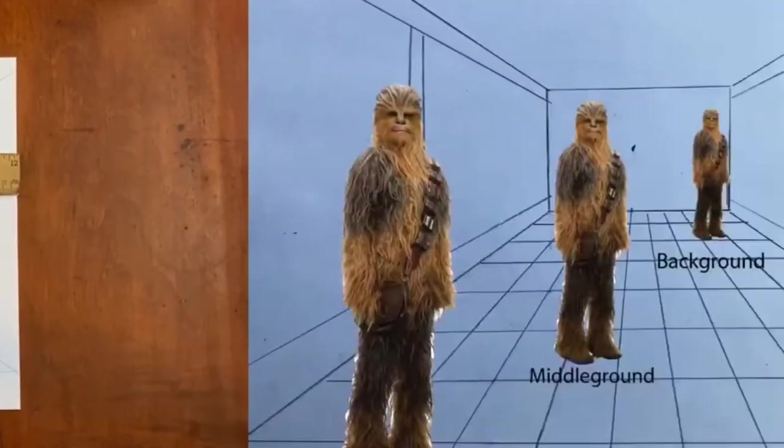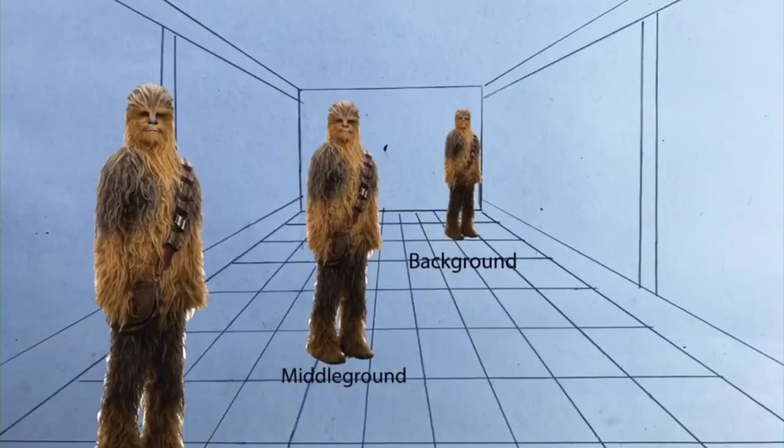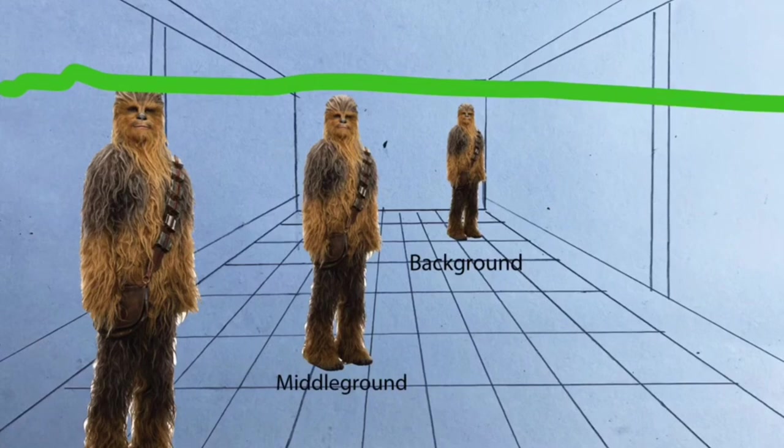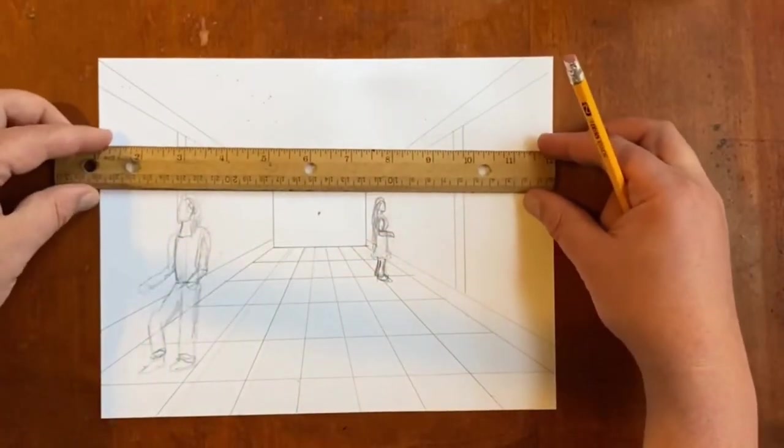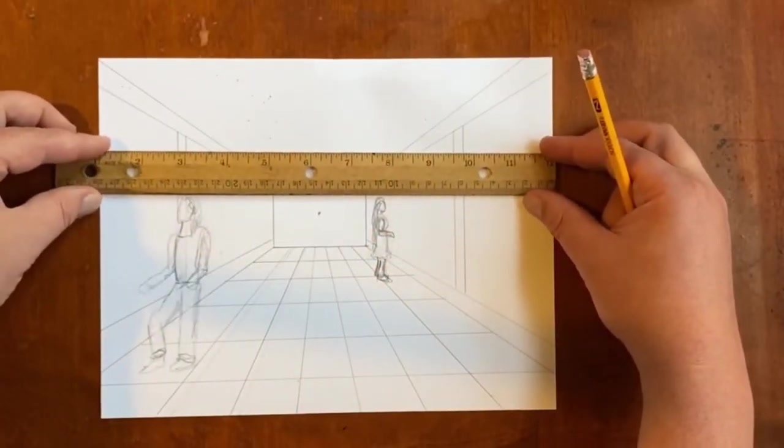Now I want to talk about what a headline is. Here's Chewbacca, or three of them. We know that some Chewbaccas are in foreground, middle ground, and background, but look where their heads are. They're all about the same place on the paper, but their feet are not. If there's two people about the same height, their heads will always be about the same height on the paper, no matter how far apart they are. That's what a headline is. So think about headlines when you do this project.